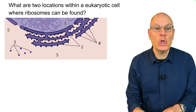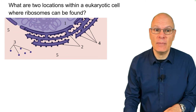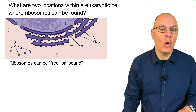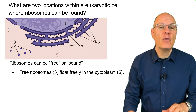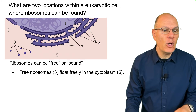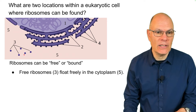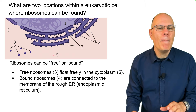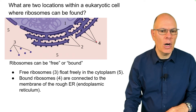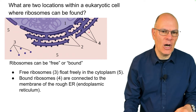Ribosomes can be free or bound. Free ribosomes, shown at three, float freely within the cytoplasm, which is number five. Bound ribosomes, shown at four, are connected to the membrane of the rough ER.